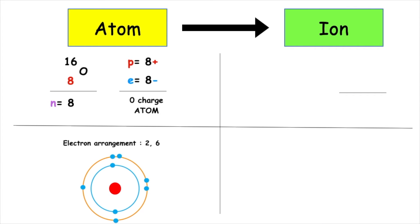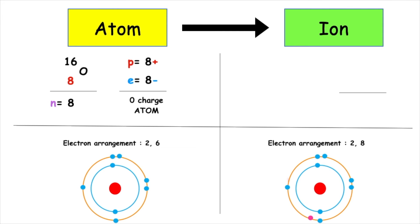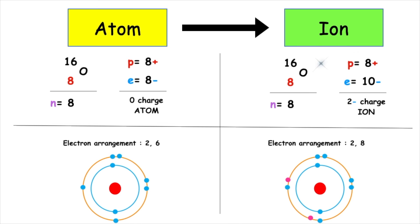Oxygen is found in Group 6 of the periodic table. It has the electron arrangement 2-6. In its outermost occupied energy level, it has 6 electrons, and it wants to gain 2 to achieve stability. This means that when we look at the number of protons and electrons for the ion, it has more electrons than protons, which gives the oxygen ion a 2- charge.